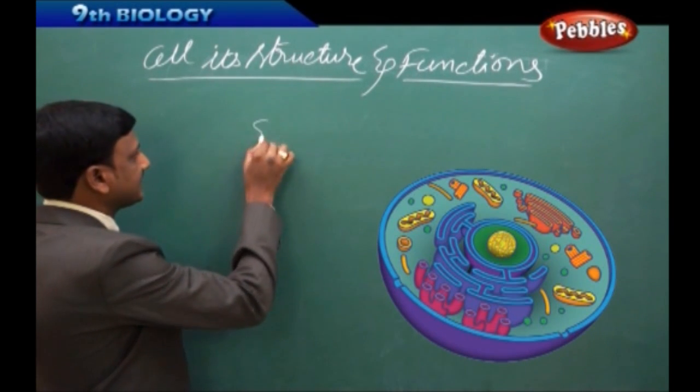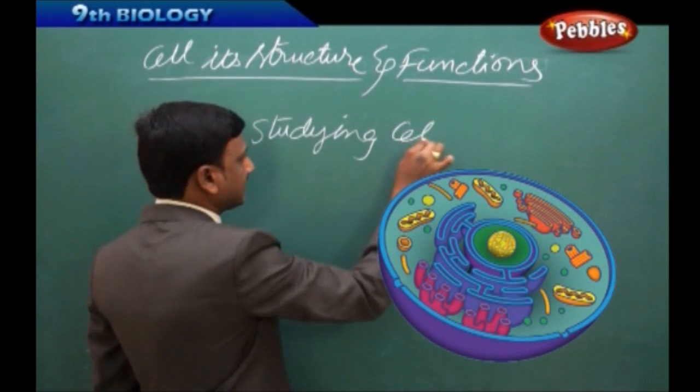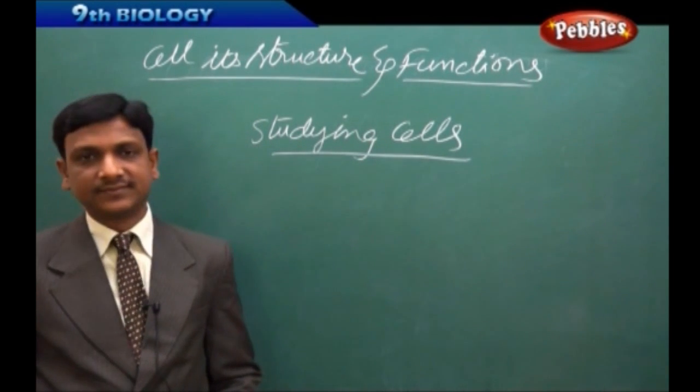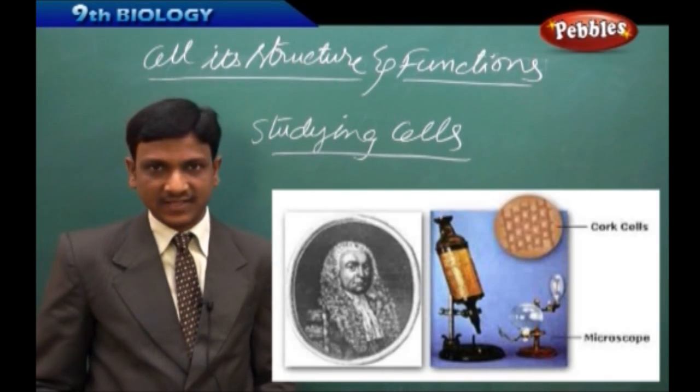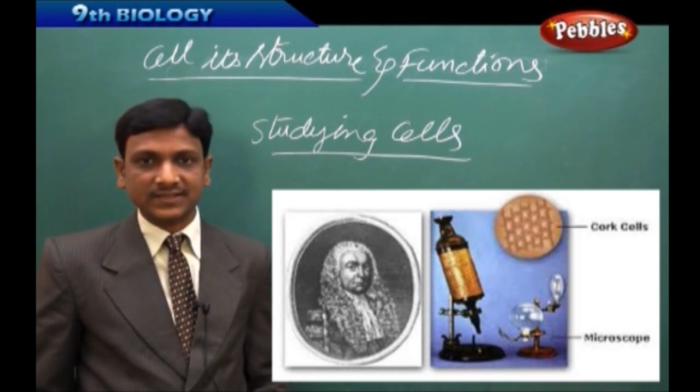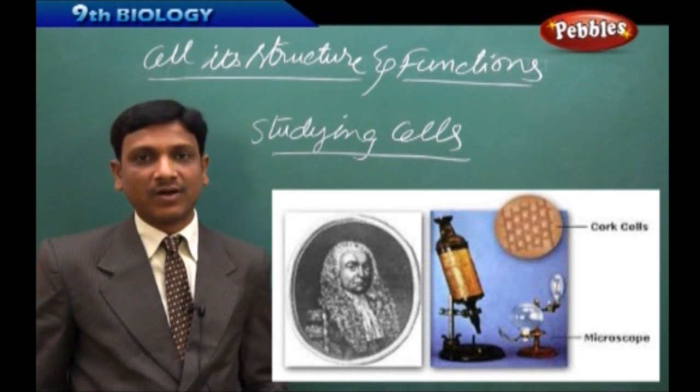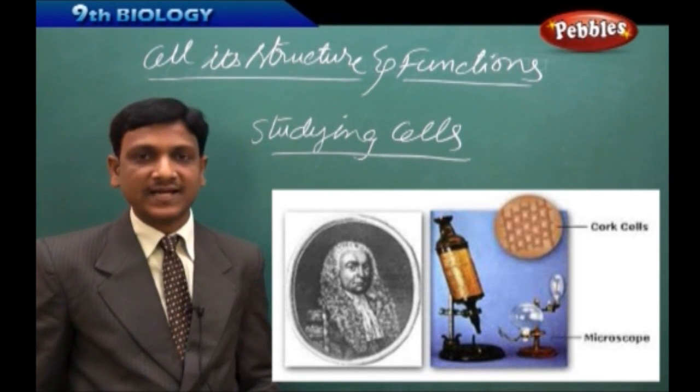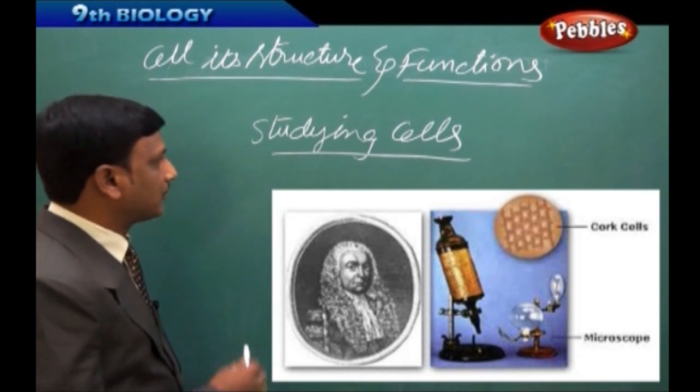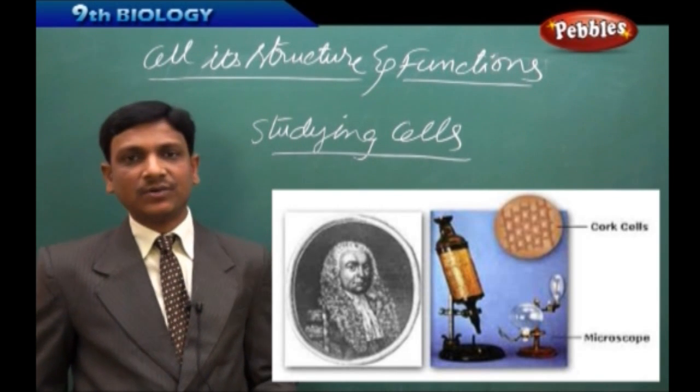Now we see studying cells. So how do we study cells? To observe the cells, we need some special instruments. So you might have learnt how Robert Hooke and Anthony Van Leeuwenhoek observed the tiny things, microorganisms. So they used an instrument called microscope. So we need a microscope to study or to observe the cells.